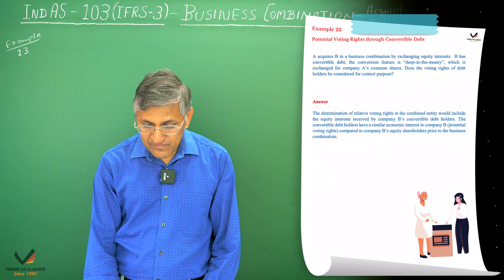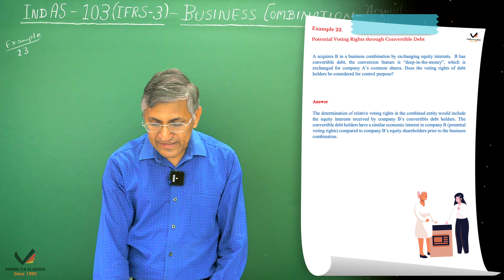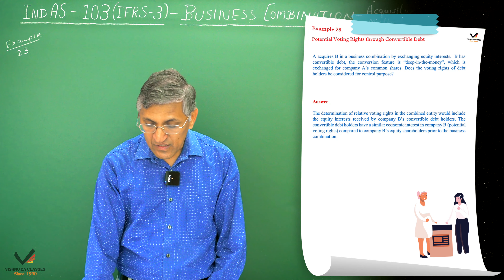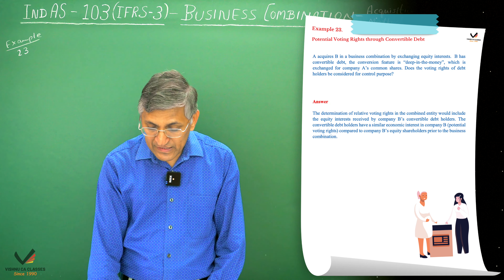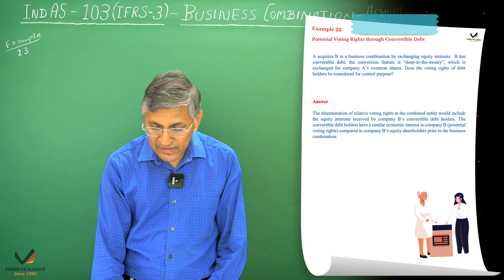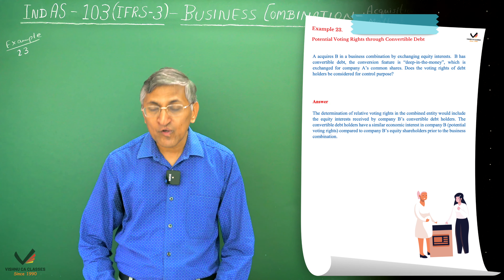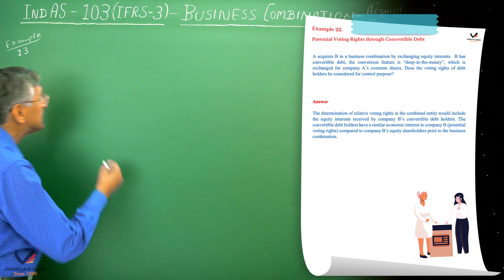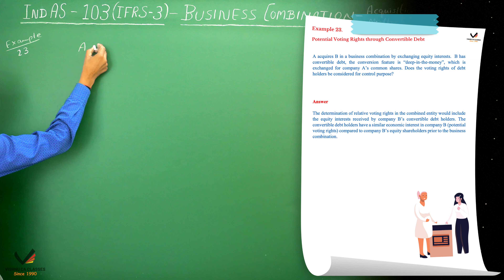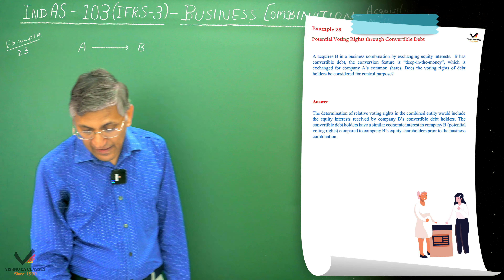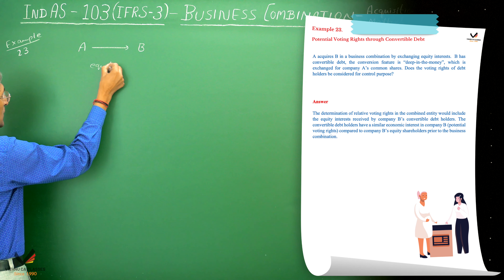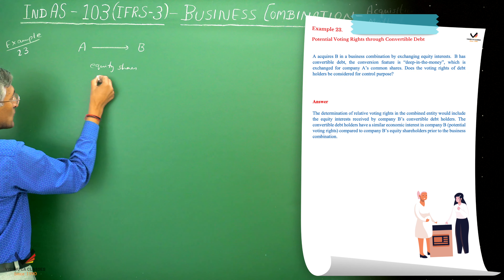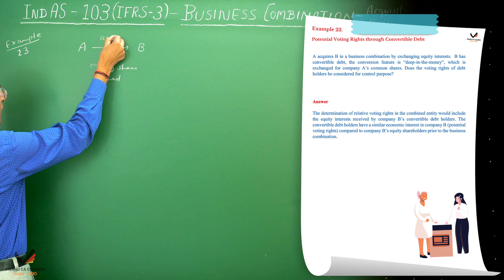Next, we have Case 3. We have mentioned that A acquires B in a business combination by exchanging equity interests. B has convertible debt, the conversion feature of which is exchangeable for Company A's common shares. The voting rights of debt holders will be considered for control. A has acquired B, it is a business combination, and equity shares are issued.